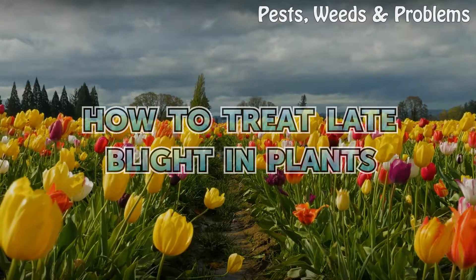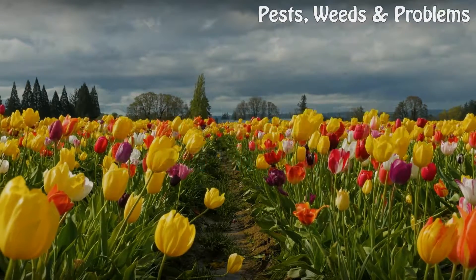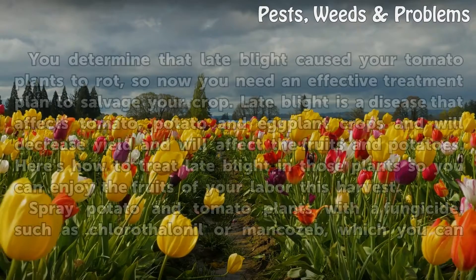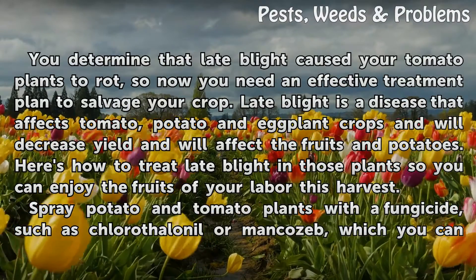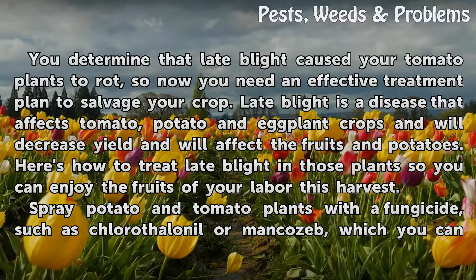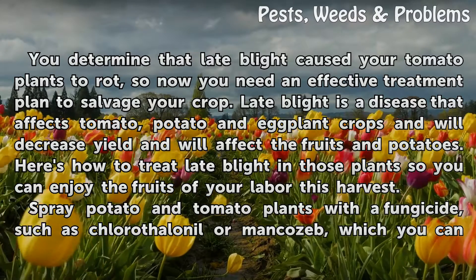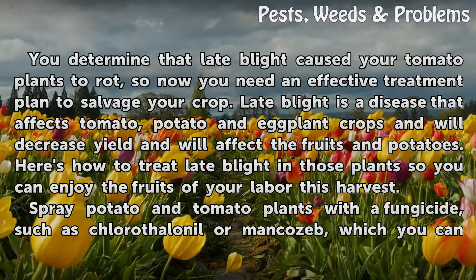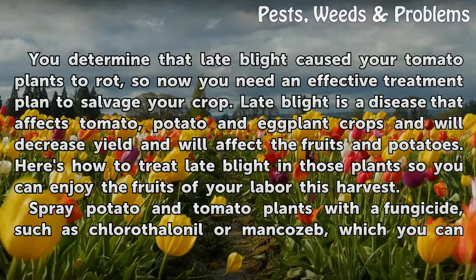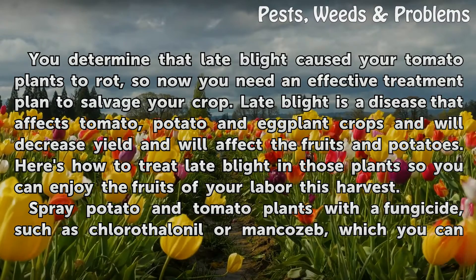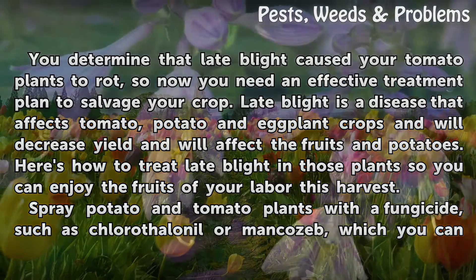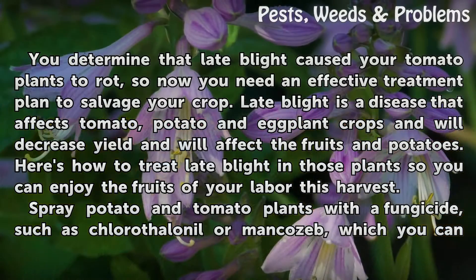How to treat late blight in plants. If you've determined that late blight caused your tomato plants to rot, you need an effective treatment plan to salvage your crop. Late blight is a disease that affects tomato, potato, and eggplant crops, decreasing yield and affecting the fruits and potatoes. Here's how to treat late blight so you can enjoy the fruits of your labor this harvest.